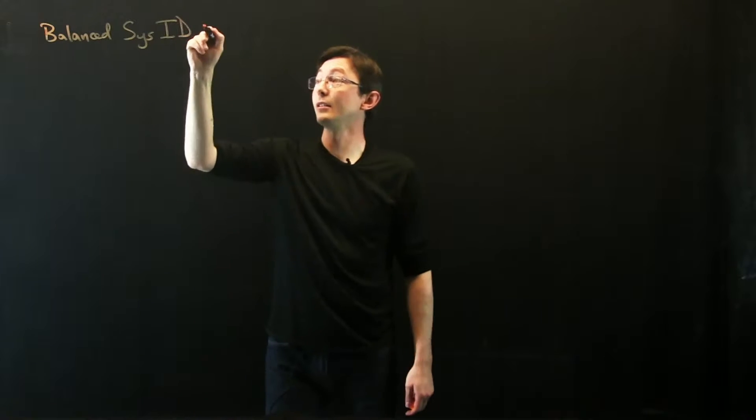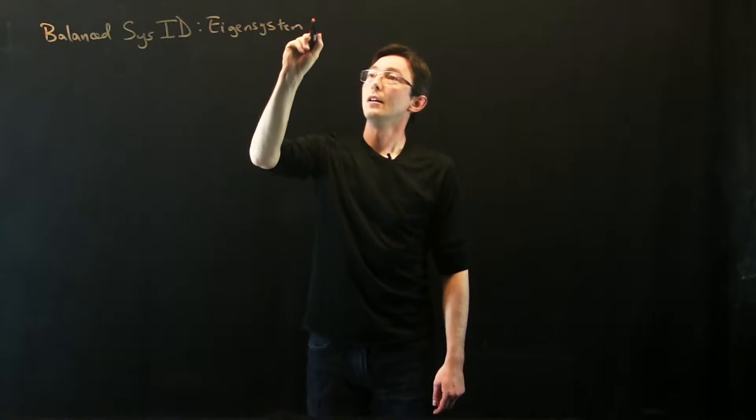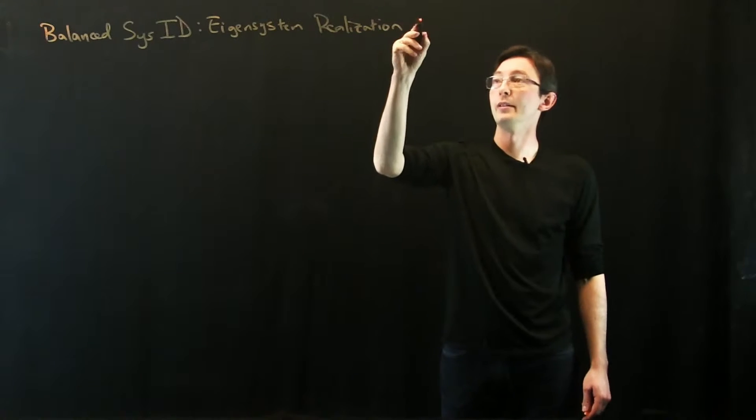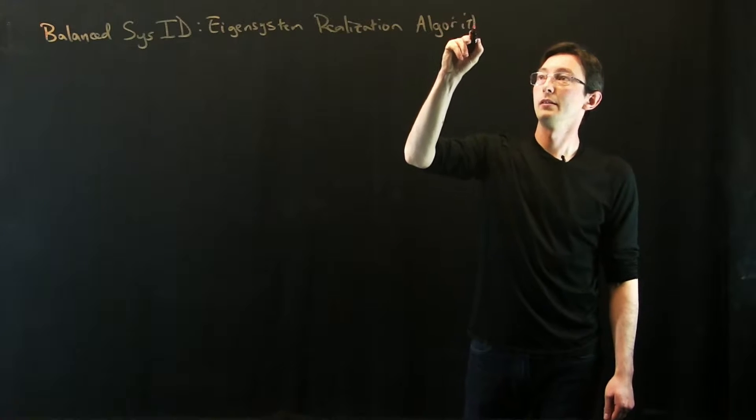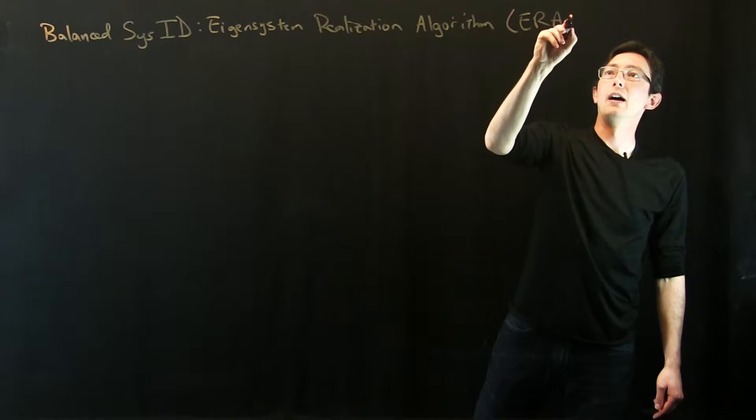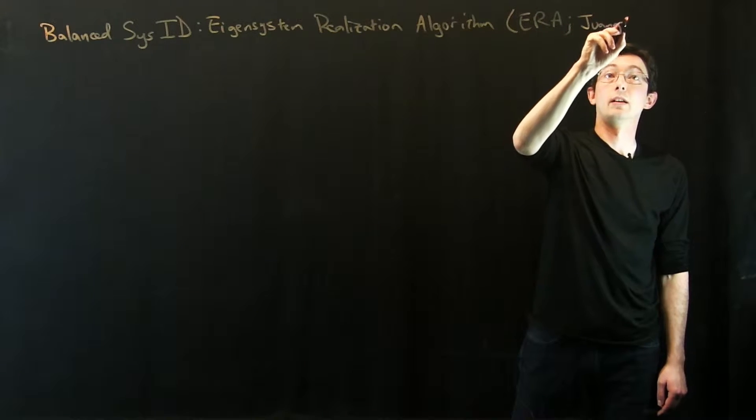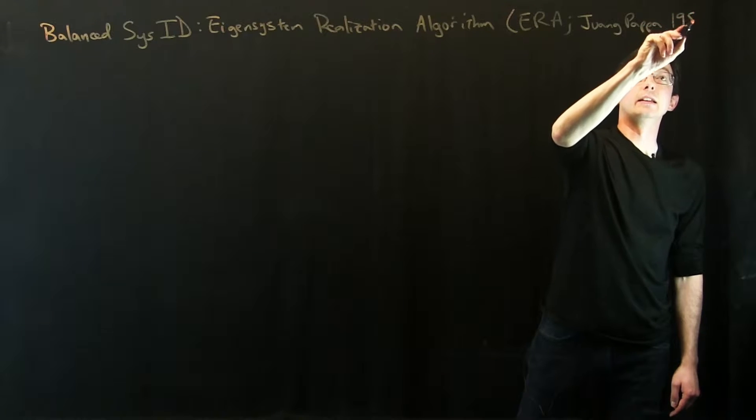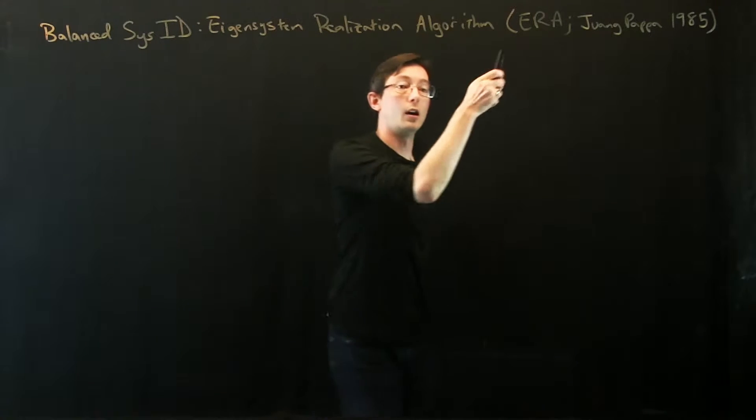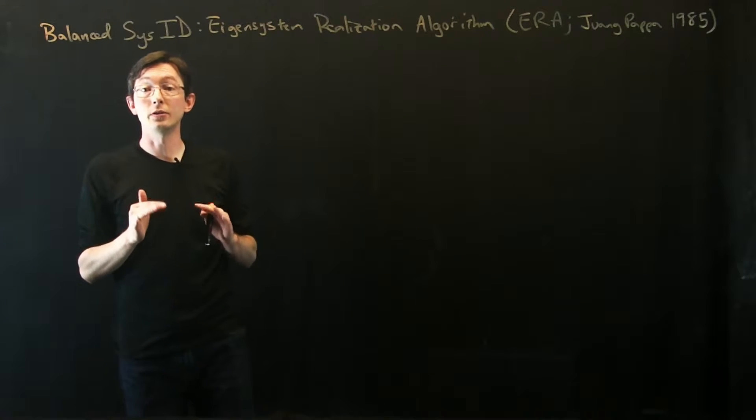And what we're going to be talking about in particular is the eigensystem realization algorithm. Very, very, very powerful algorithm. I use it all the time. Eigensystem realization algorithm, E-R-A. This was developed by Juang and Pappa in 1985. So very shortly after Moore came out with his 1981 paper, Juang and Pappa in 1985 came out with this eigensystem realization algorithm, which is still my go-to method for linear system ID.